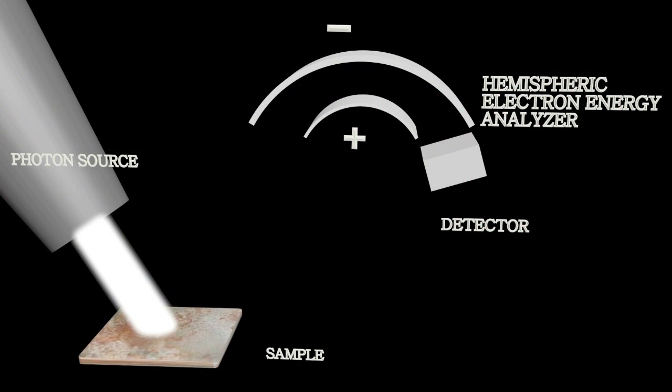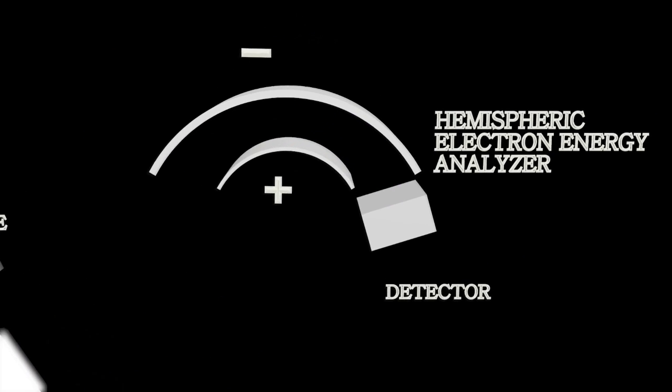In a real system, the measurements are done in ultra-high vacuum, where the electromagnetic radiation with well-defined wavelength is generated with an X-ray source, such as an X-ray tube or even a synchrotron. The energy of the photoelectrons is studied with the help of a hemispheric electron energy analyzer.